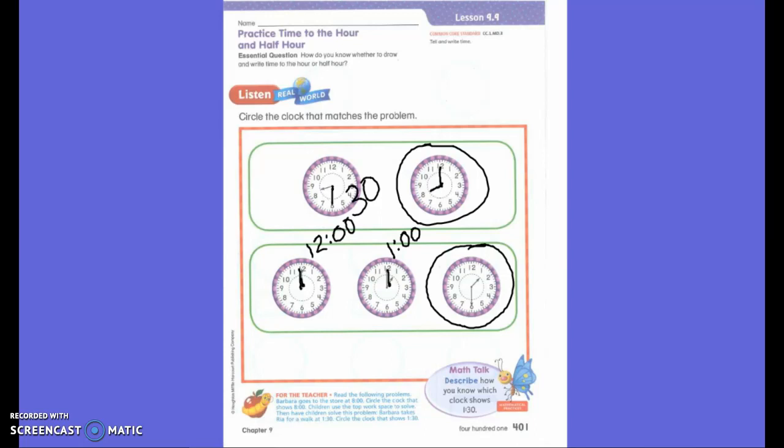Look where my hour hand is. It is between the 1 and the 2. So when it says 30, my hour hand is between the 2 numbers. That is going to be very important for today. So we can tell that it's 1:30 by 2 ways. The hour hand is between the 2 numbers, and then my minute hand points to the 6 which says 30. You are exactly right.